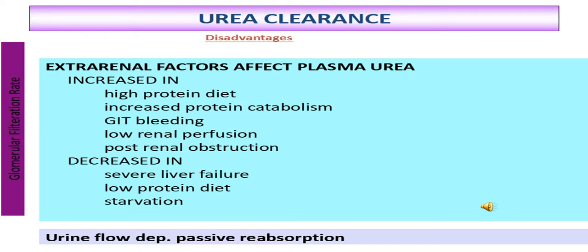Urea clearance is less than glomerular filtration rate because urea is partially absorbed. Urea clearance is the number of ml of blood which contains the urea excreted in a minute by the kidney.